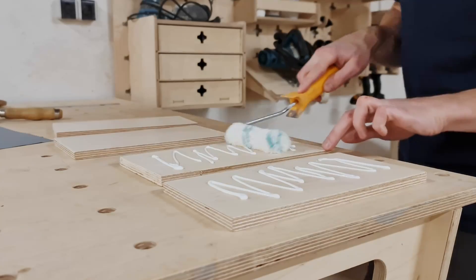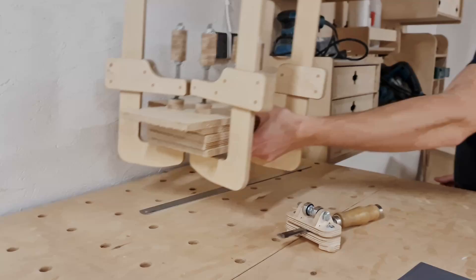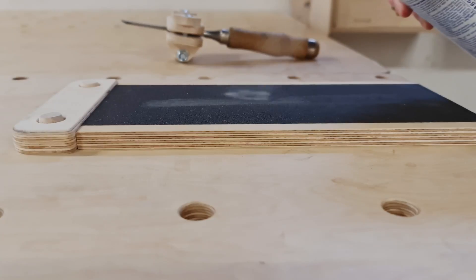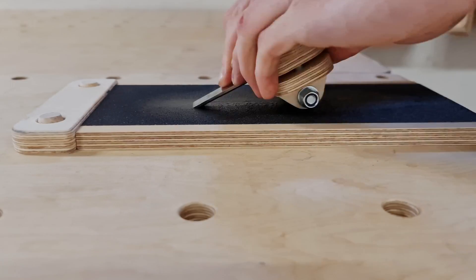For sharpening I'm using DIY wet stones I made by gluing waterproof sandpaper on a plywood offcut. Since the chisel was quite dull I started sharpening on a 120 grit panel then slowly worked my way up to 2000 grit sandpaper.